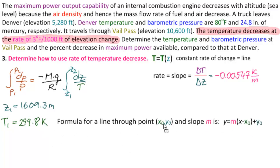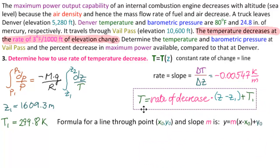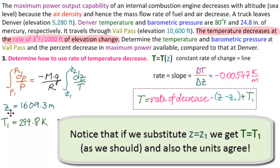Now, the formula for a line through a point z1, t1 and slope m is this. So what is playing the role of y? T. What is playing the role of x? Z. So t is the temperature equals the rate of decrease times z minus the starting point of z plus the starting point of t. Let's see that this makes sense. If we substitute z1 in here, this becomes 0 and t becomes t1, which makes sense. At the elevation of Denver the temperature is 80. So at the elevation of z1 the temperature is t1. That makes sense.